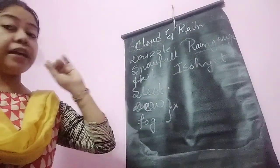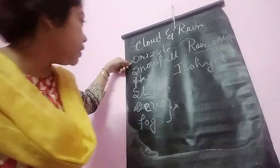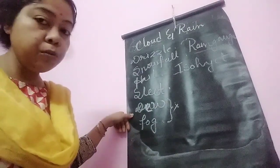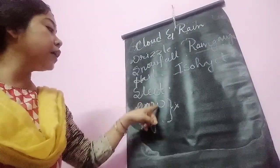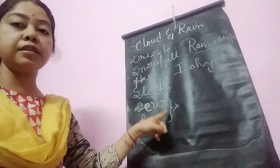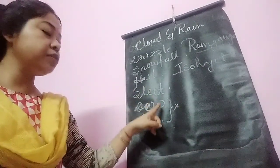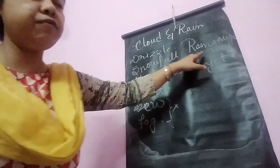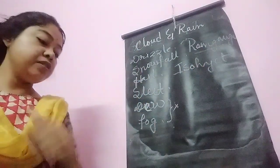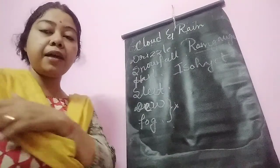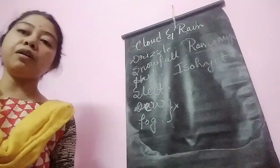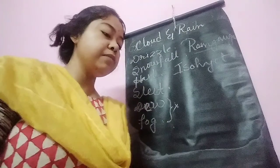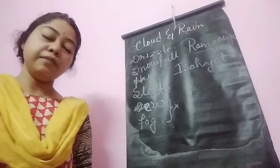So from the last part, again I am repeating: read the definitions of drizzle, snowfall, hail, sleet, dew, and fog. Next, why are dew and fog not considered as precipitation? Which instrument is used to measure rainfall? And what is isohyet? Isohyet is the imaginary line drawn on the map joining the places receiving the same amount of rainfall.